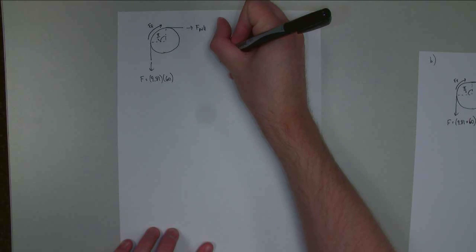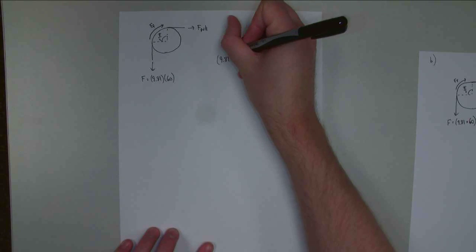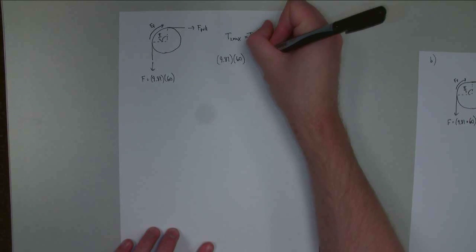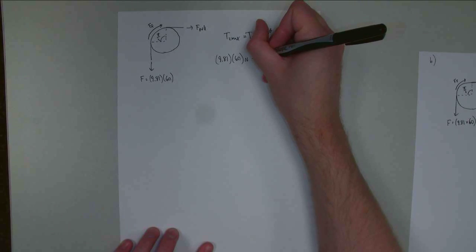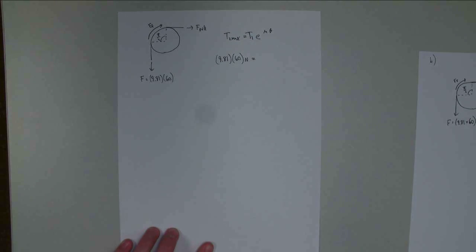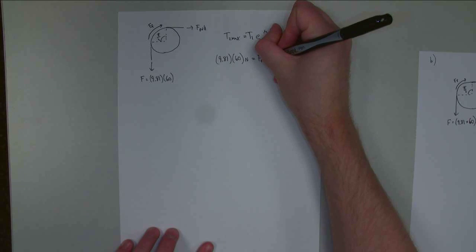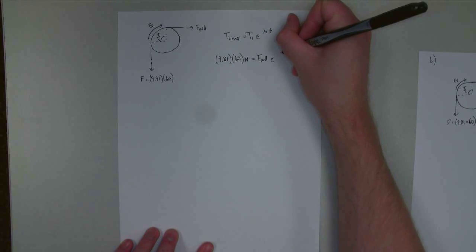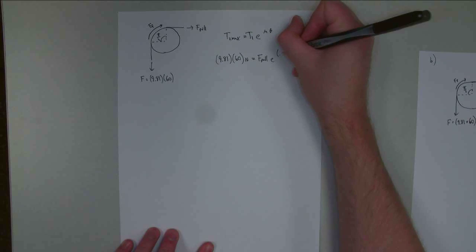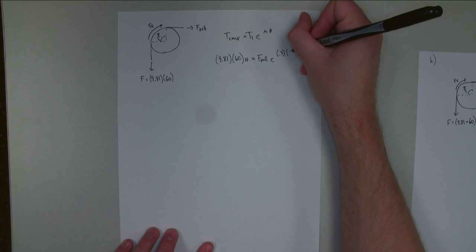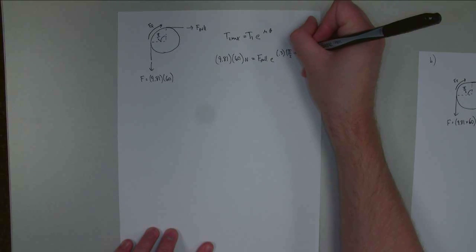Now we have 9.81 times 60, the units for that are going to be newtons. It's going to be equal to T1, which is the smaller force, or F pull, times E to the 0.3 times pi over 2.